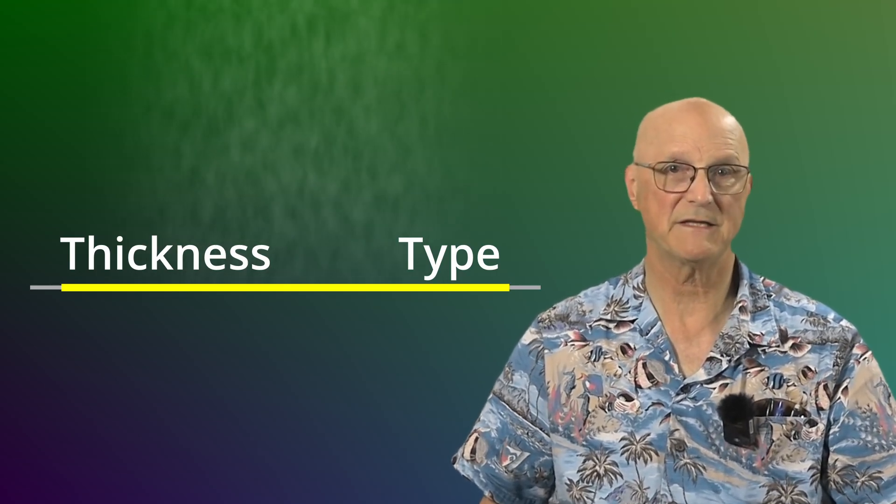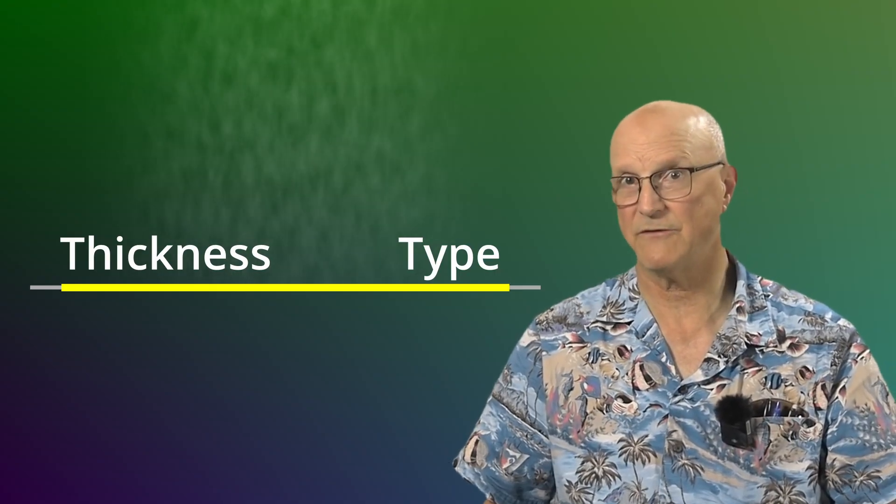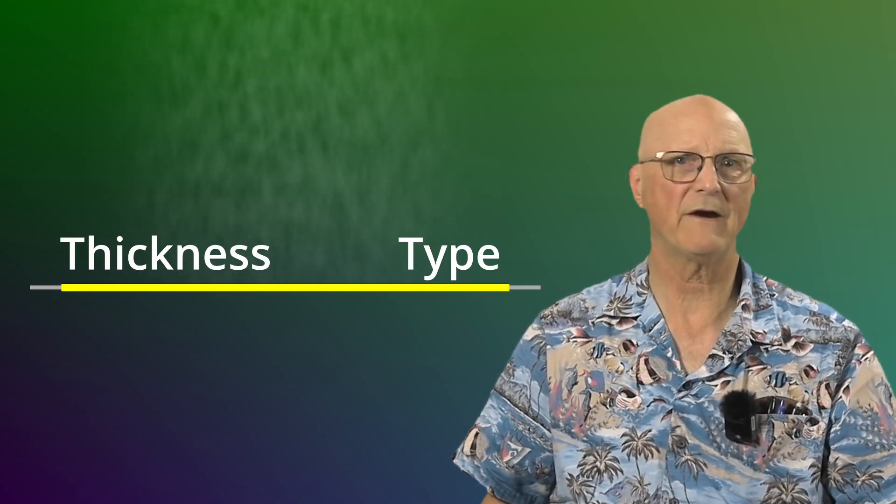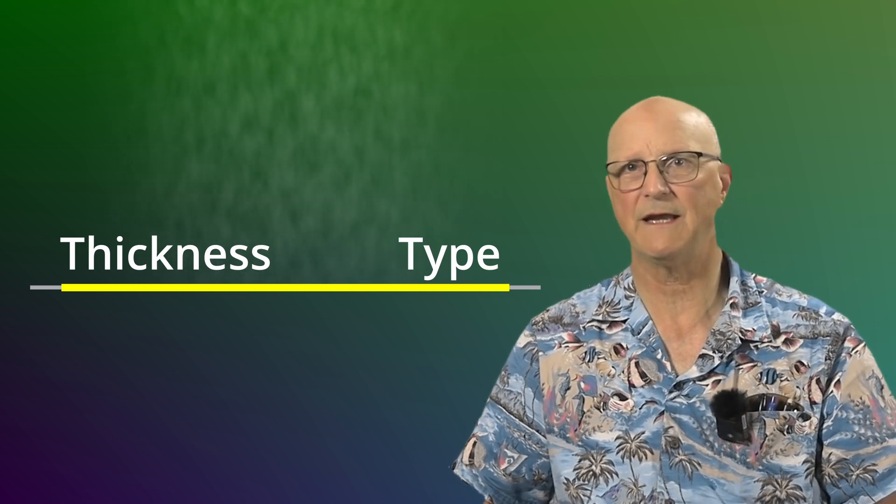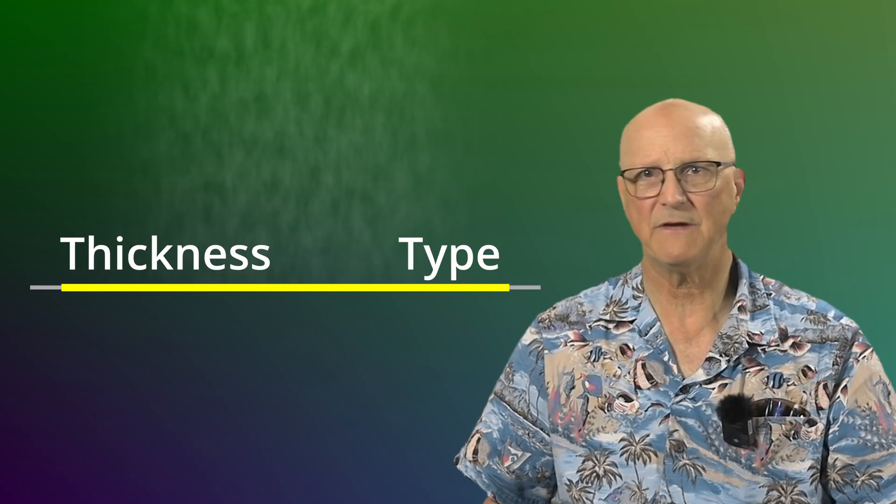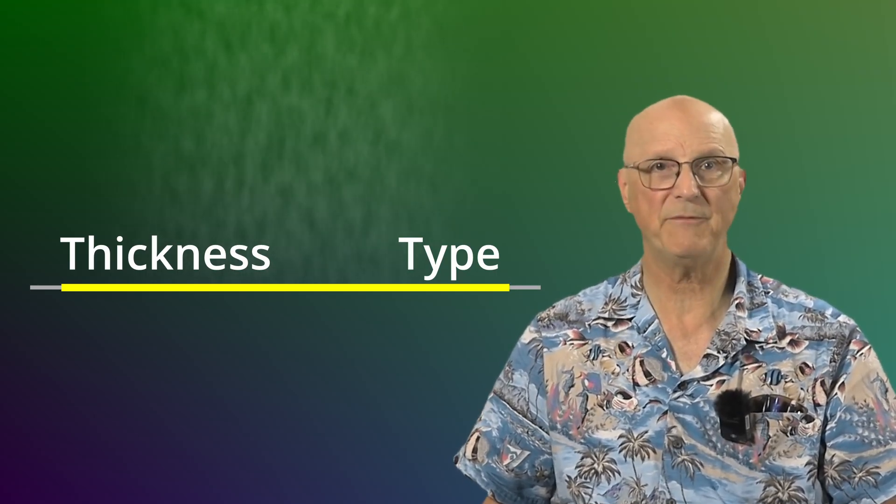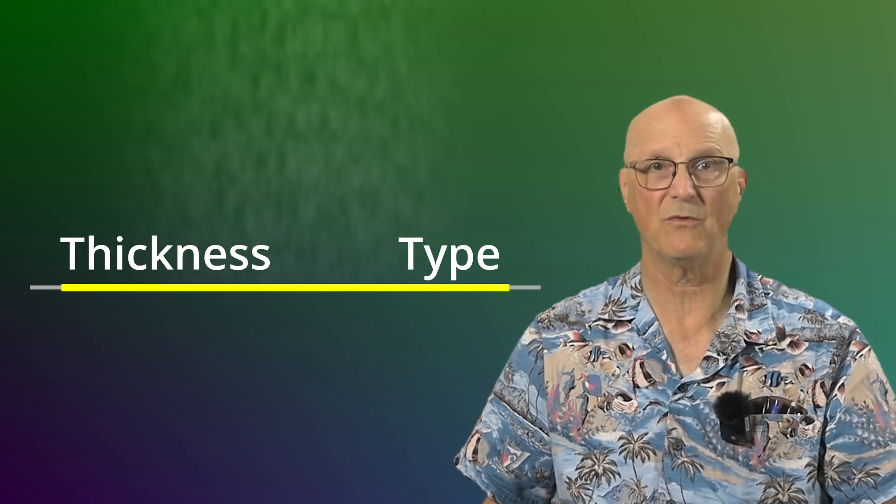How much temperature rise there will be with a current carrying conductor will depend on the type and thickness of the electrical insulation on the conductor. This is because the electrical insulation also acts as thermal insulation, preventing the wire from effectively radiating heat.